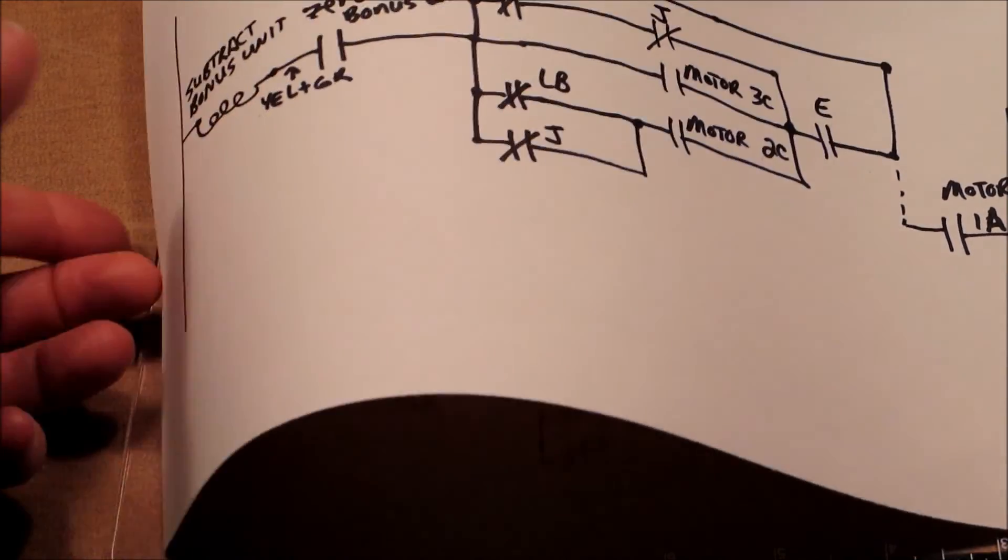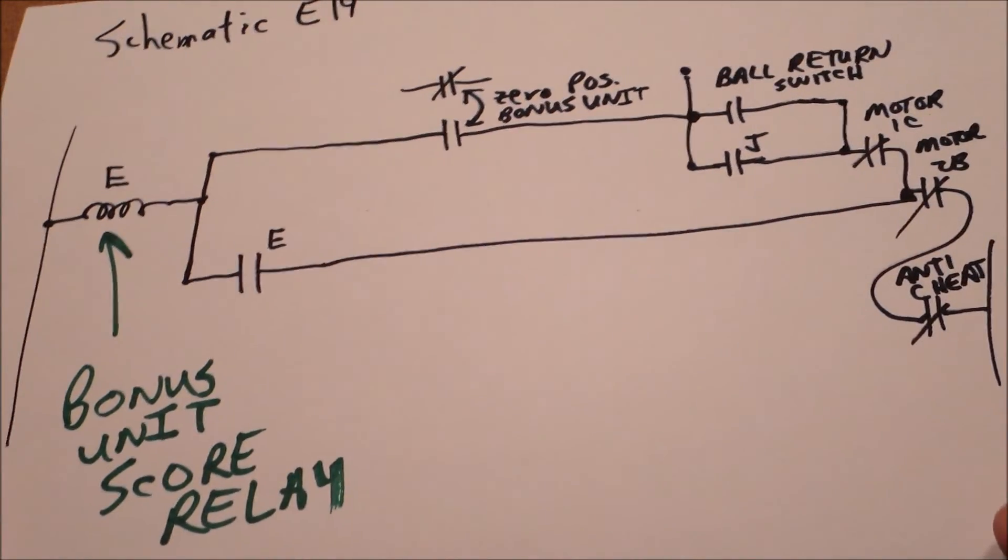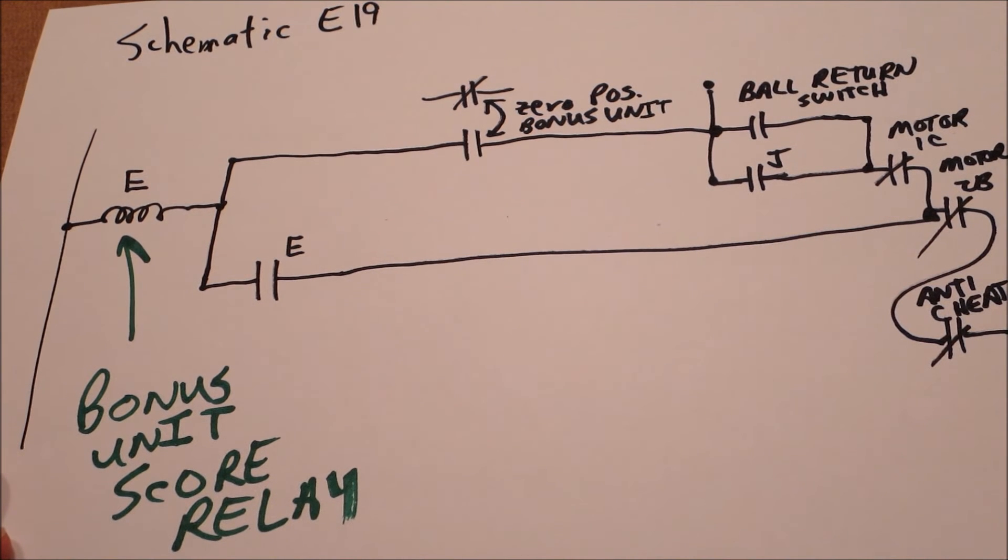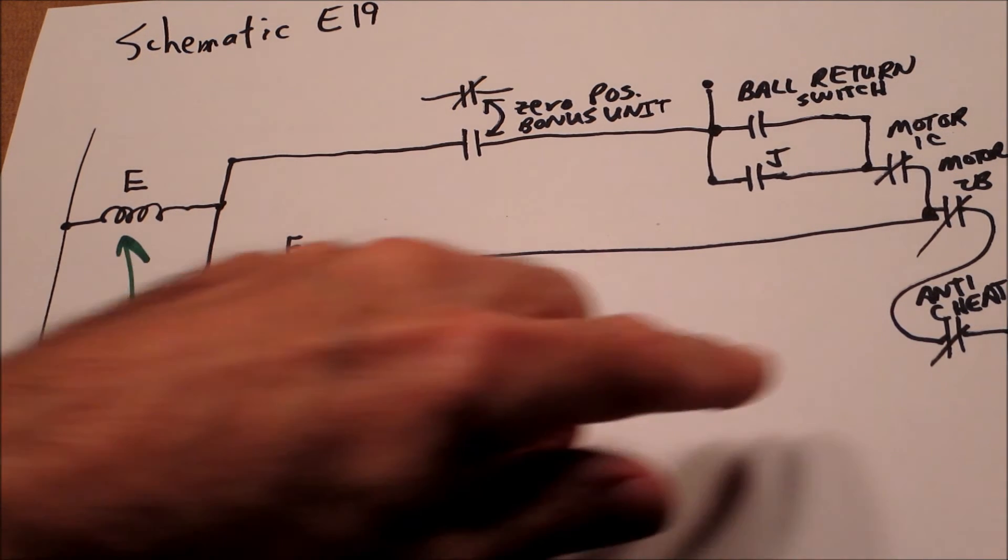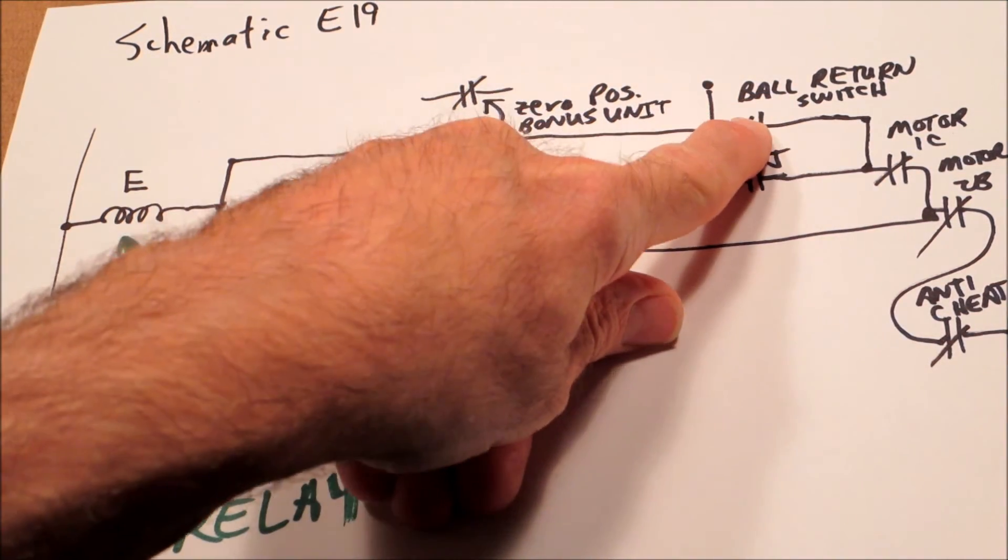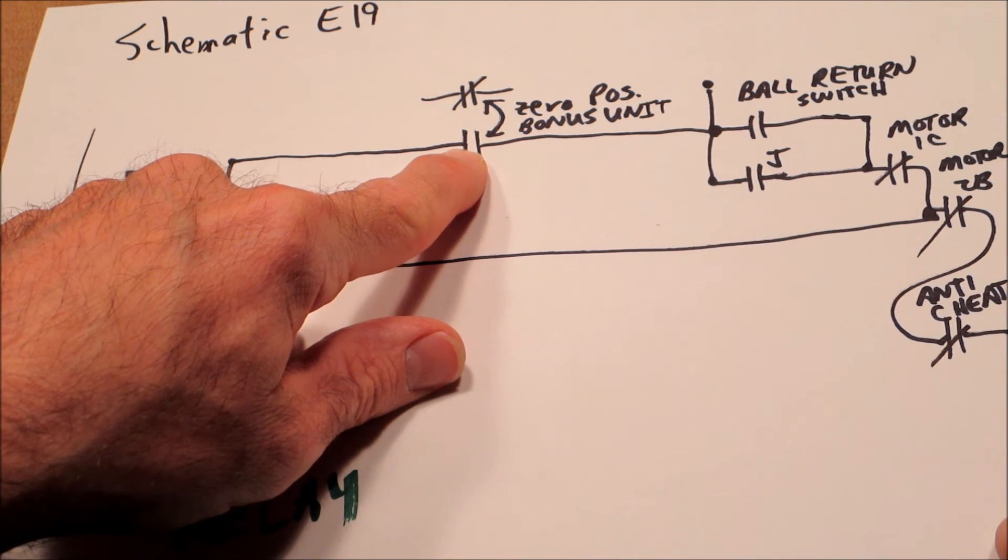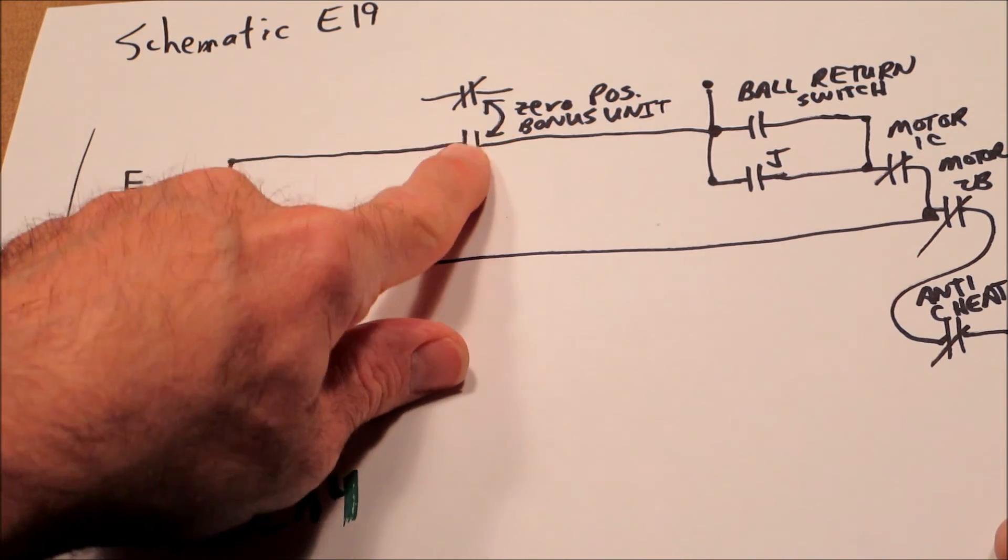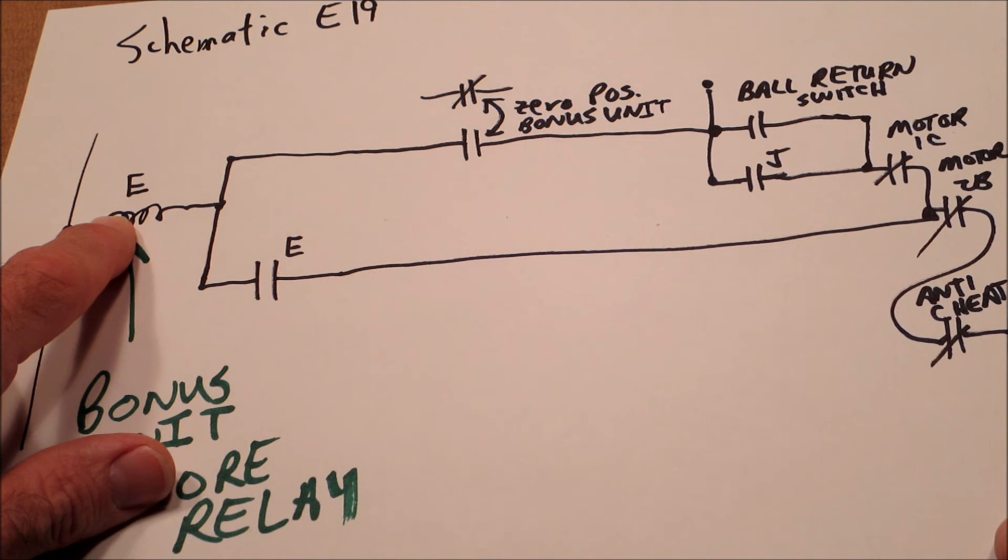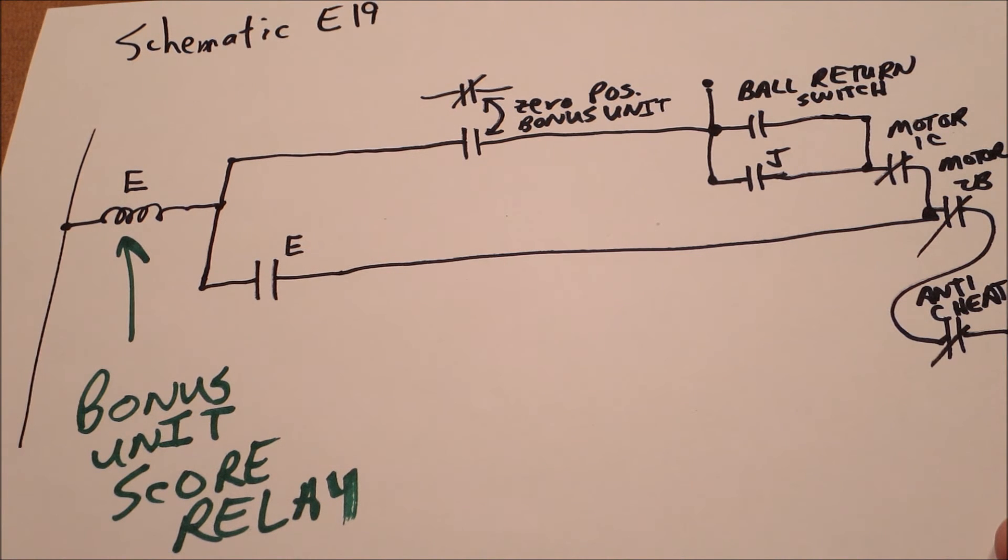The only other thing I want to add is back on that E switch. Let's pull that up. So what we were seeing when we started the machine up again, everything was closed here. The ball returned. The ball was in the out hole, so it was closed. Because we never reached zero on the bonus score unit, this was still closed, which means E stayed enabled. So it would never shut off. When you turn the machine on, it would immediately enable.